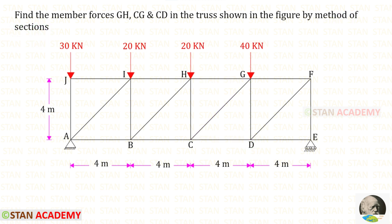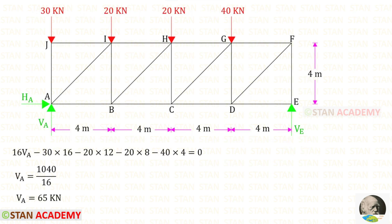At point A there is a hinged support, and at point E there is a roller support. In the hinged support there will be two reactions, and in the roller support there will be only one reaction — here, only a vertical reaction.